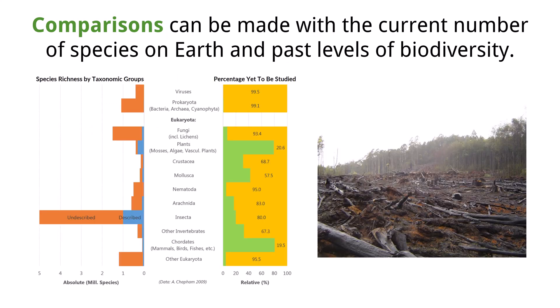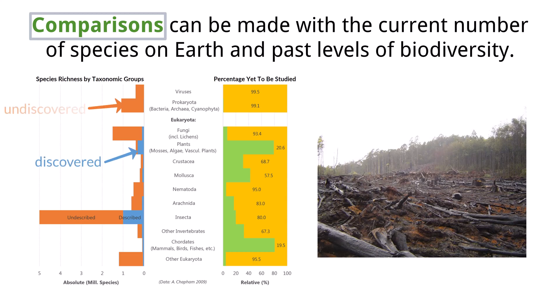Some ecologists and evolutionary biologists have tried to compare the number of species on Earth today with how many there have been in the past. While scientists have already discovered, named, and described almost 2 million species, this is likely just a fraction of all life out there. Experts believe there could be millions or even tens of millions more species, especially in unexplored places like the deep sea or tropical rainforests.